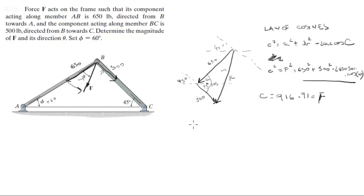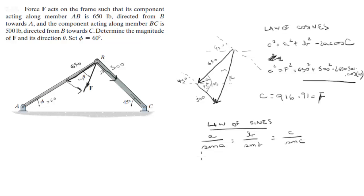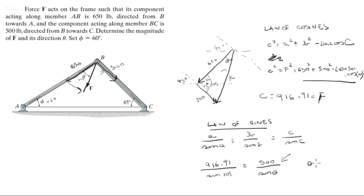Now that we have F, to find theta we use the law of sines, which states a/sin(A) = b/sin(B) = c/sin(C). So: 916.91 / sin(105°) = 500 / sin(theta). Solving for theta gives the answer of 31.78 degrees. Those are the final answers.